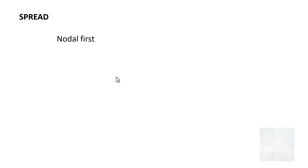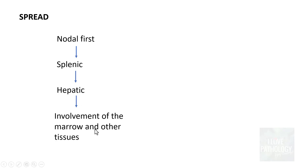Now, how do these lymphomas spread? Hodgkin Lymphoma has a very typical pattern of spread — it almost always involves lymph nodes first, then goes to the spleen, then hepatic involvement, and finally involvement of the bone marrow and other tissues in disseminated disease.